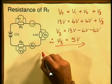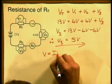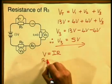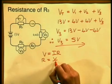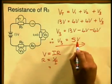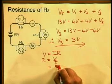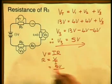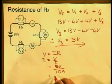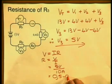Knowing this, the last calculation becomes quite simple. Taking V is equal to I times R and rearranging to make R the subject — R equals V over I — we substitute in our values: V3 is 5 volts, the current is 10 amperes. Therefore, 5 divided by 10, the resistance of R3 is 0.5 ohms.